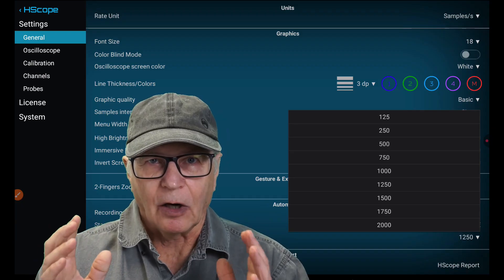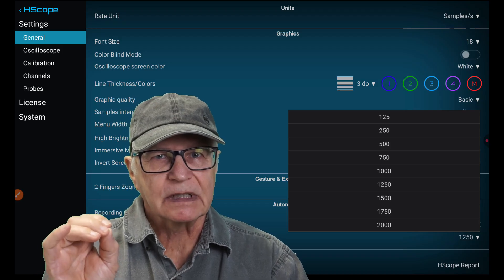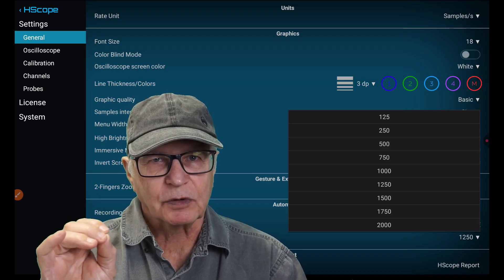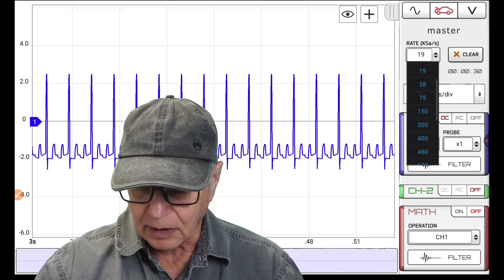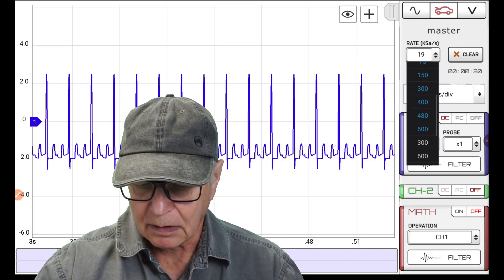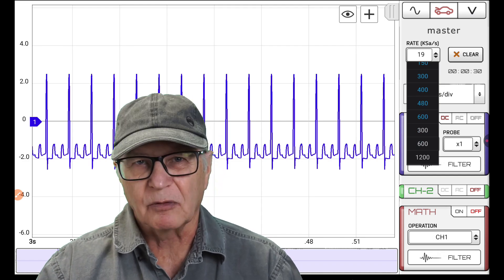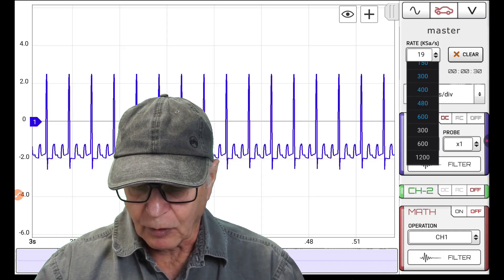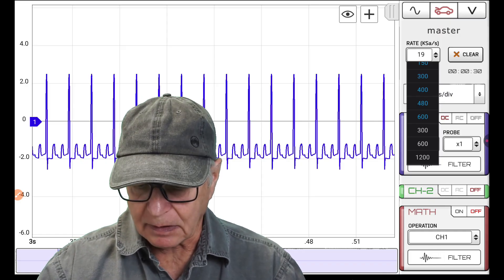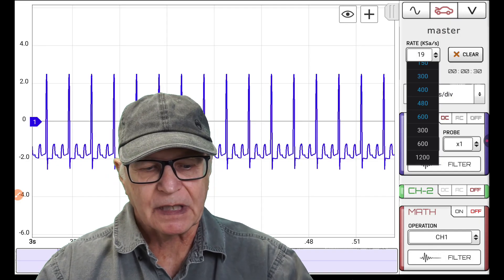Now you see here, the numbers are in blue. These are the available rates for this automotive mode. Notice that they're on the slow side, even though here we're at a maximum on the blue is 600 kilo samples per second. But that's because we're using an HS512 Max.